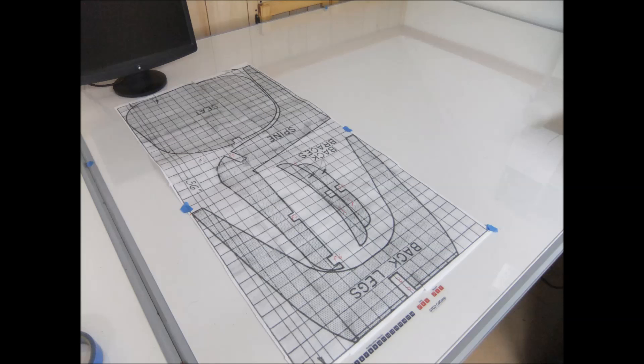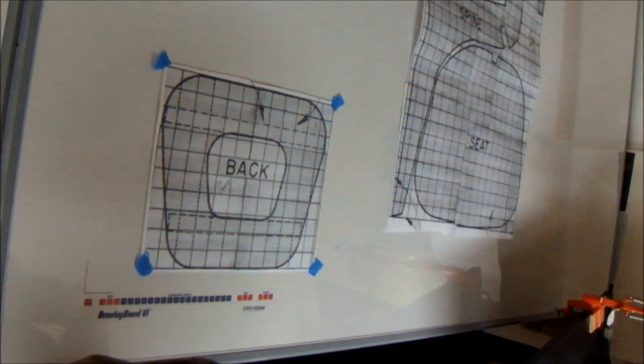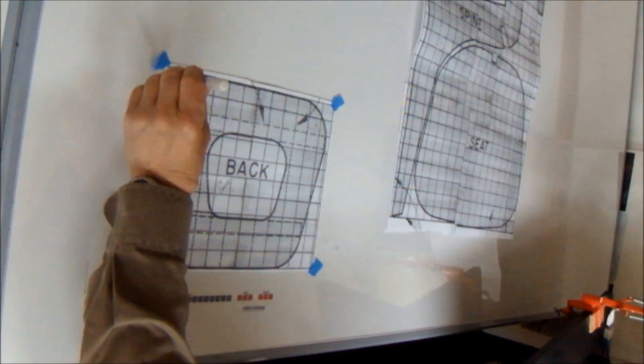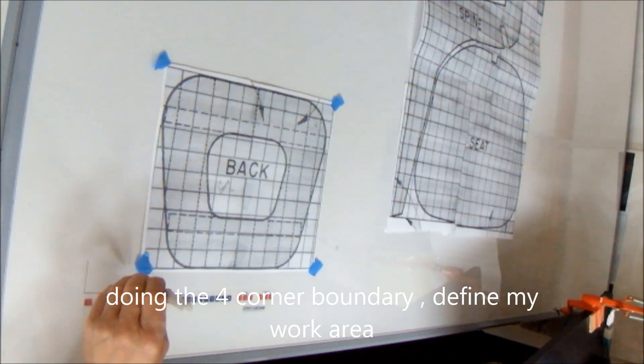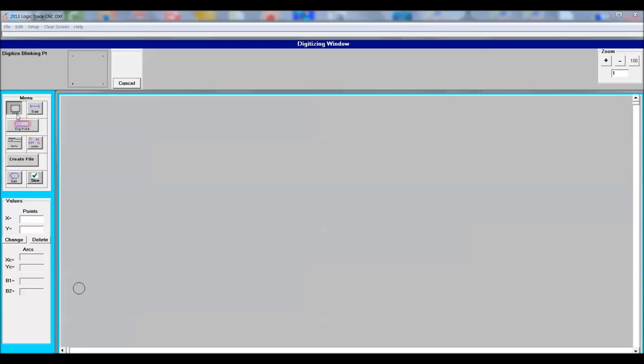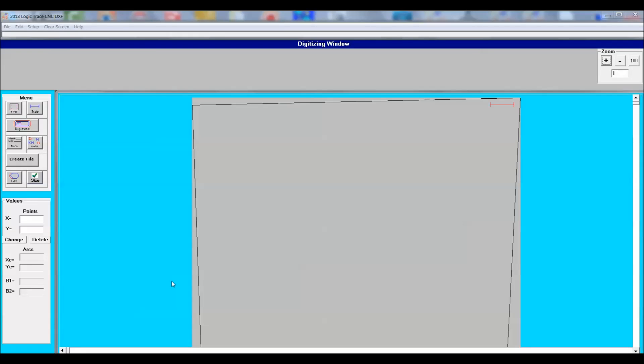Here I've got the diagram taped down to the drawing board. I'm showing you here how you define the four corners. This defines your work area. Here it shows on the software package the four corners being defined.